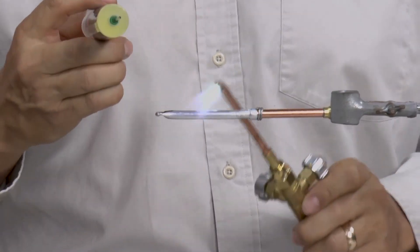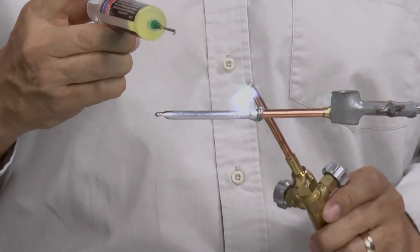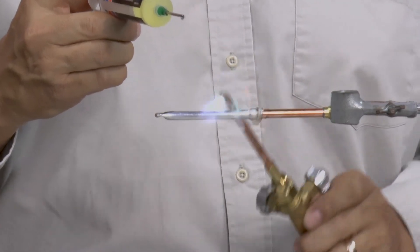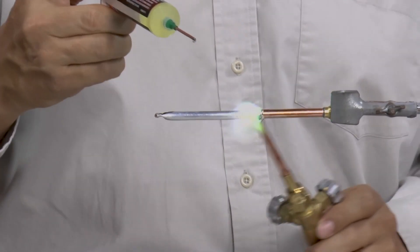Next, we apply the Uni4300 flux to the joint. Once the flux begins to heat, we apply additional flux and with low heat, rapidly heat the entire assembly and we're done.